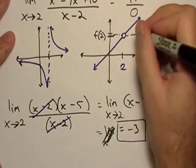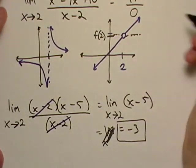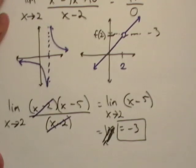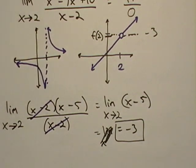Negative 3. So this is, it approaches negative 3. So it approaches negative 3, and that is a pretty good way to look at that one right there. Let's take another example.